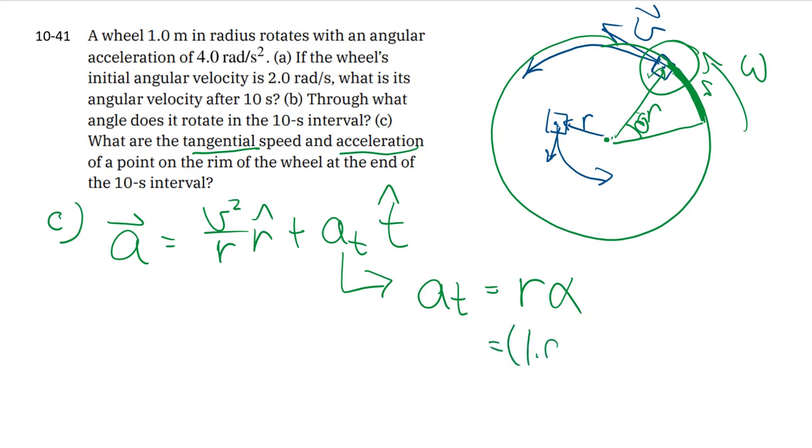Again, the R here is 1.0 meters. Alpha is 4 radians per second squared. And we get 4 meters per second squared, which is the tangential acceleration, which tells us how quickly the tangential speed is changing.